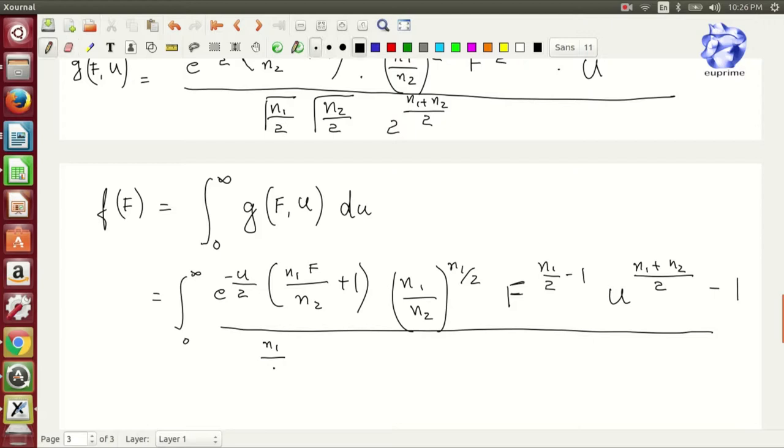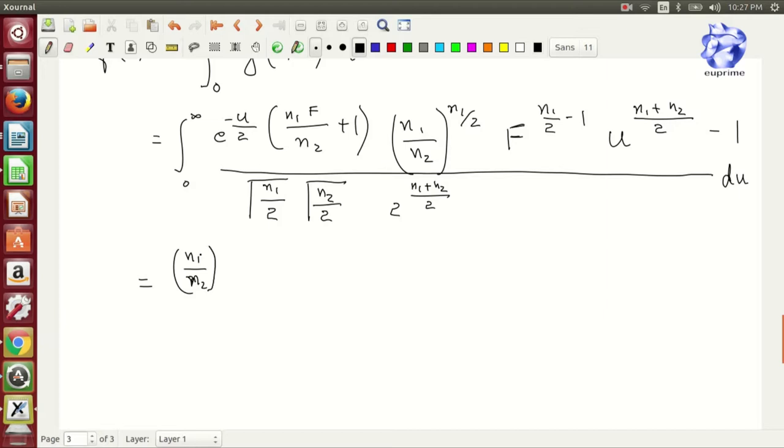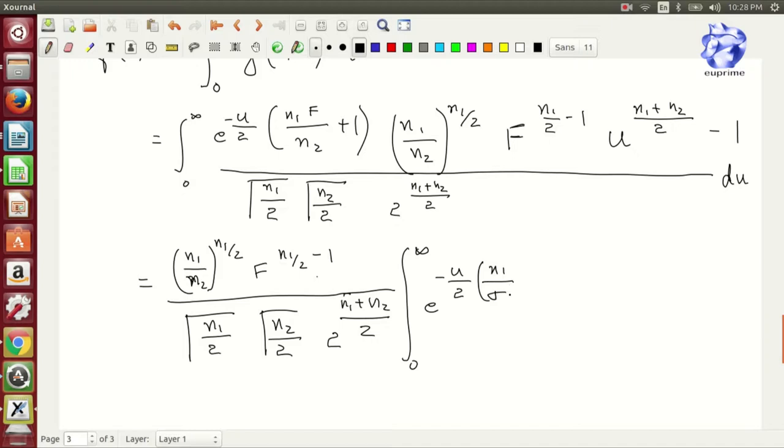Into n1 by n2 to the power n1 by 2, F to the power n1 by 2 minus 1, u to the power n1 plus n2 by 2 minus 1, and the denominators with respect to du. Now obviously this being so easy to integrate, we remove the constants out and then find a simpler integration which is e to the power minus u by 2.